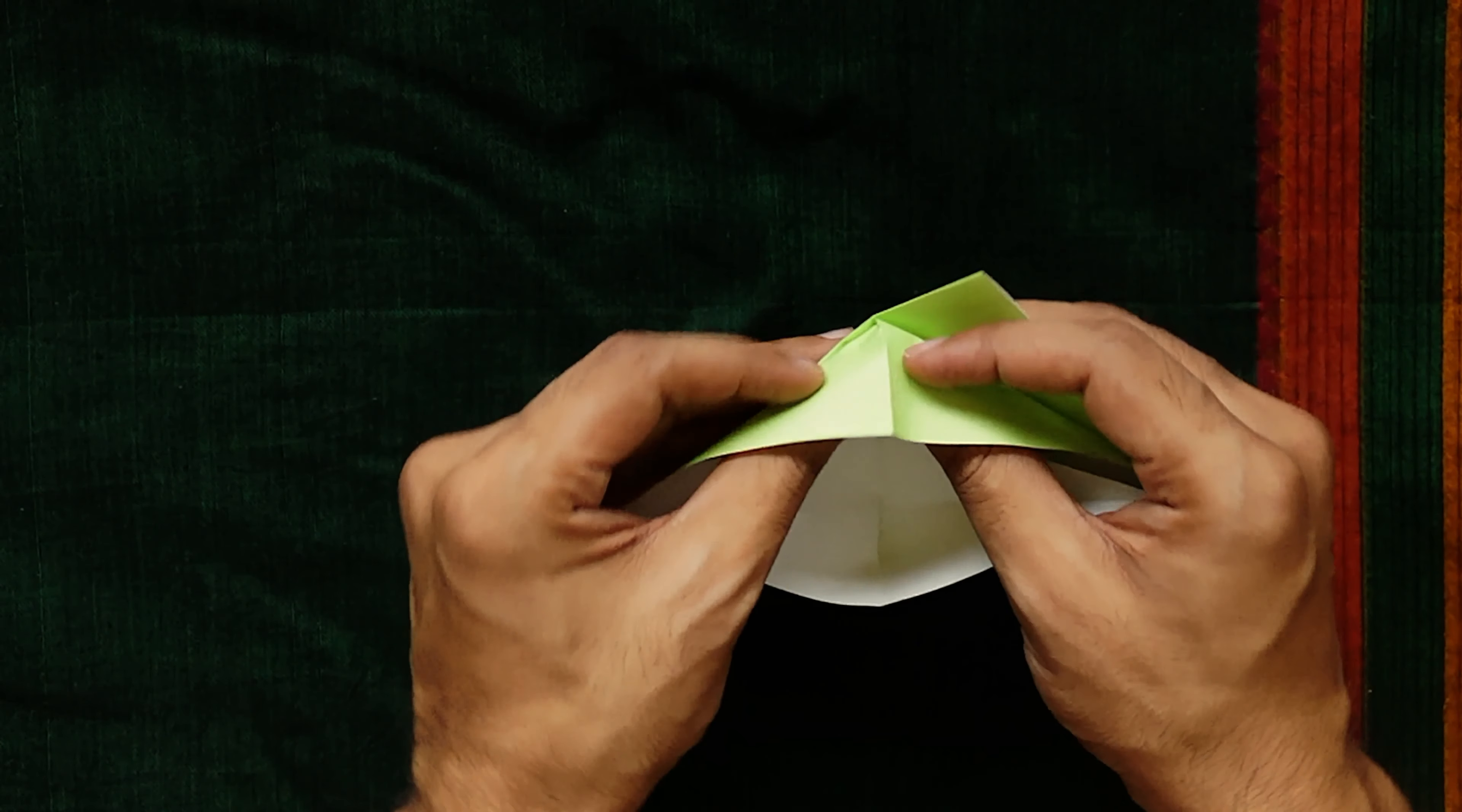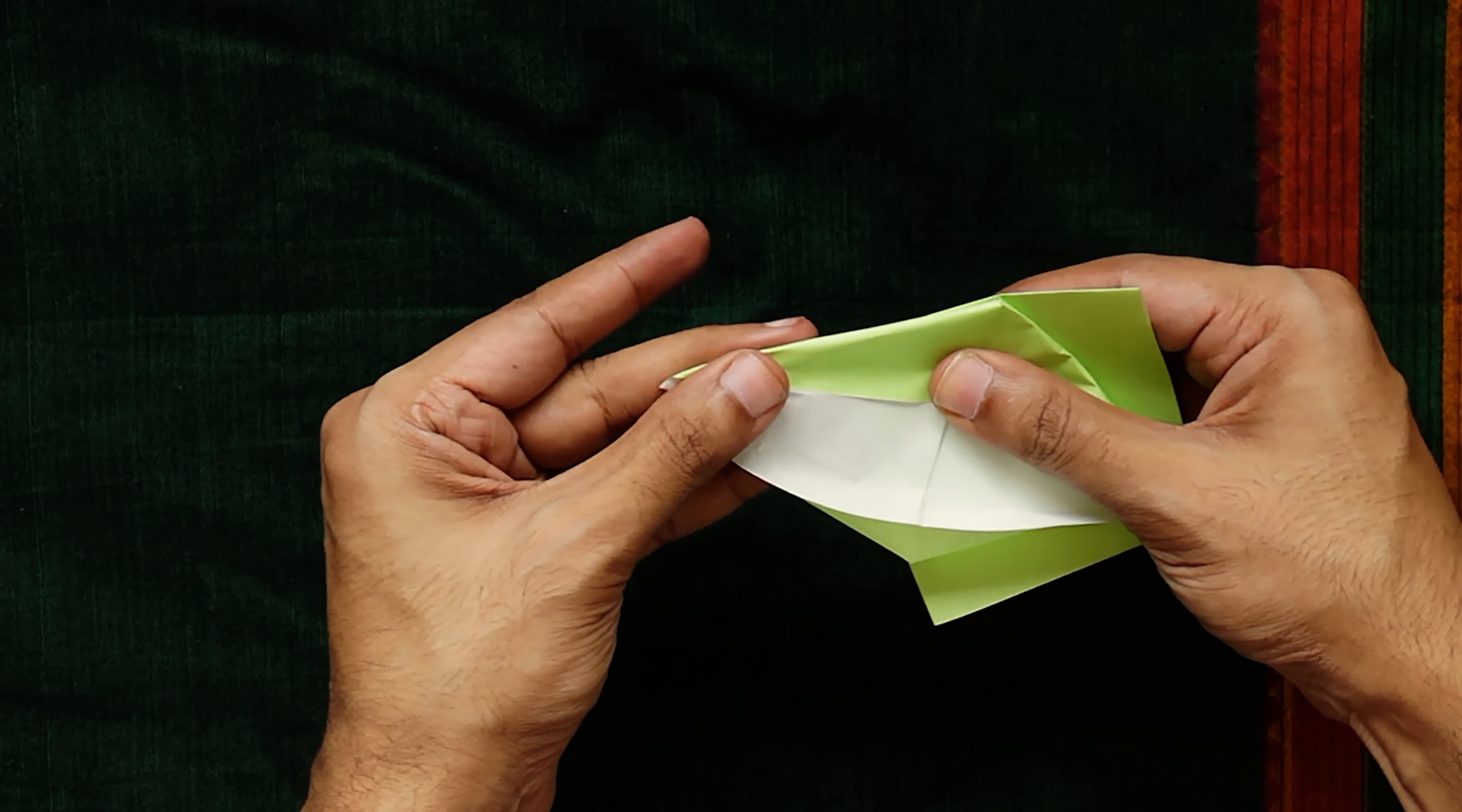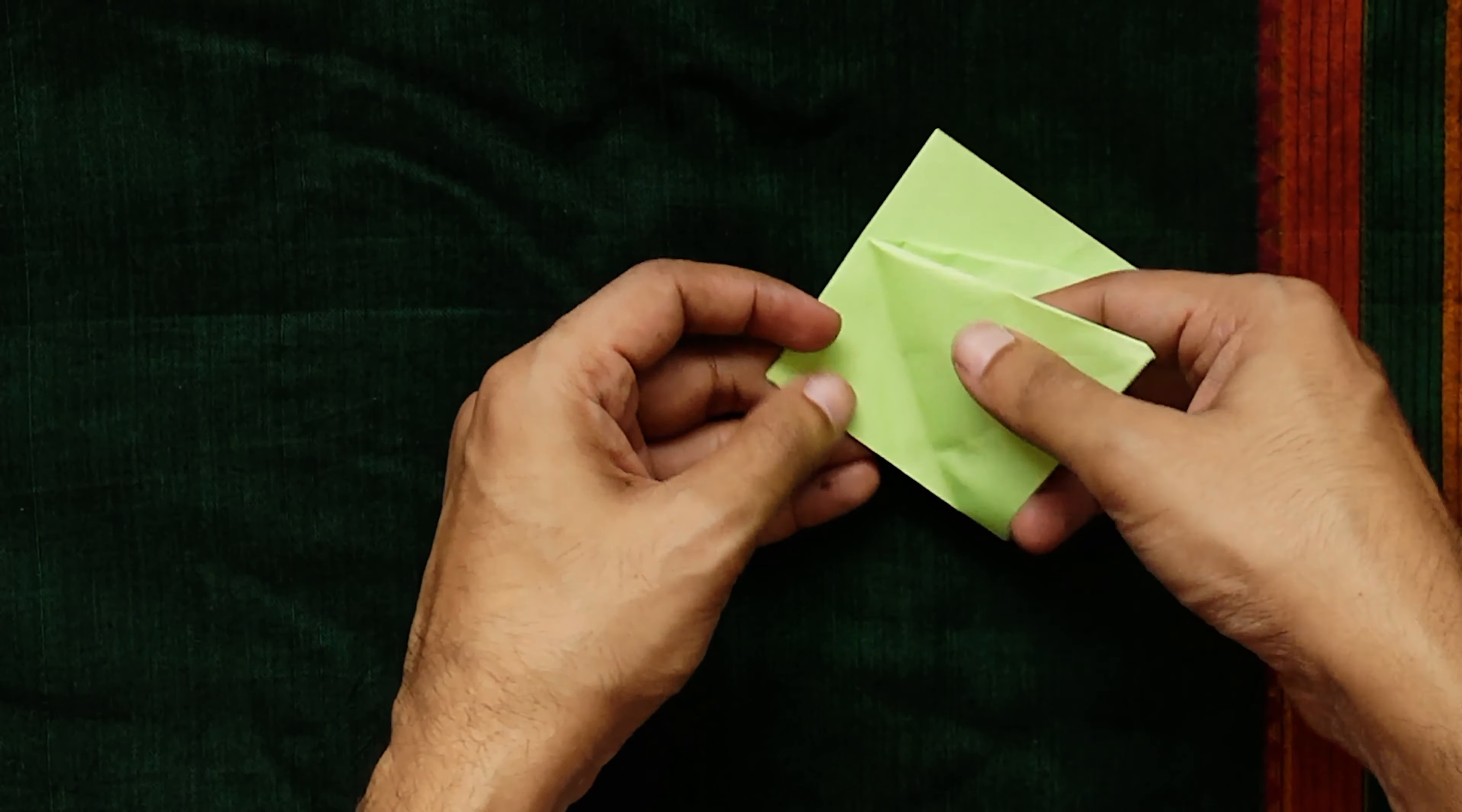Lift the topmost layer from the bottom half of the diamond and fold it up along the horizontal crease of the triangle of creases you created earlier. This forces the side edges flat to form a tall and thin diamond shape.